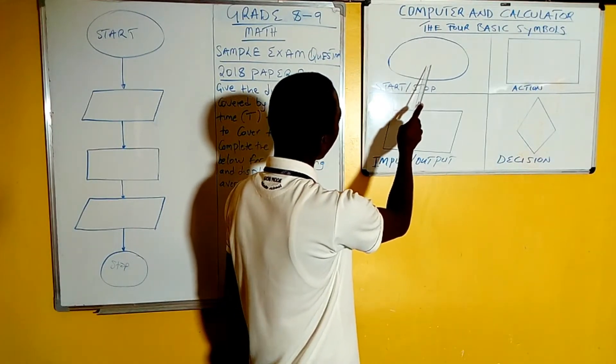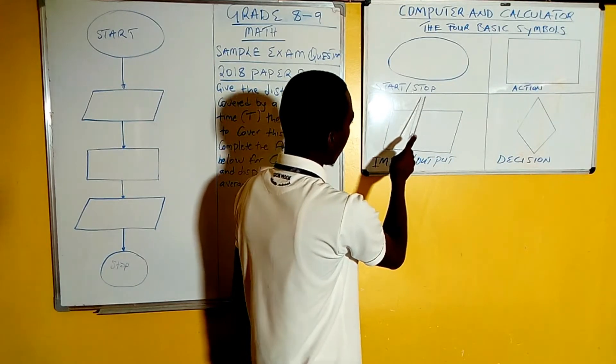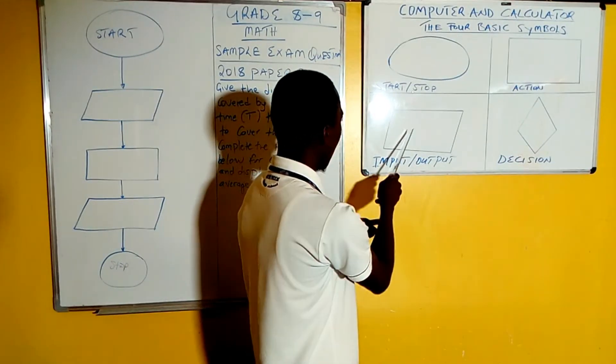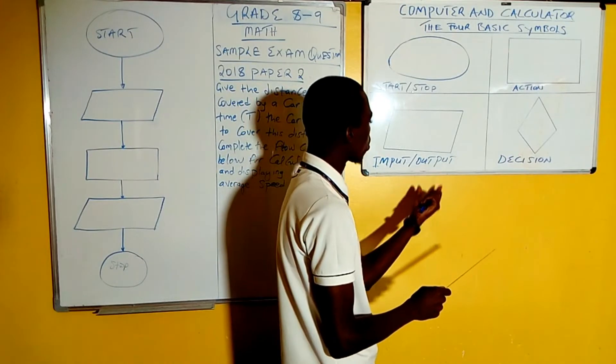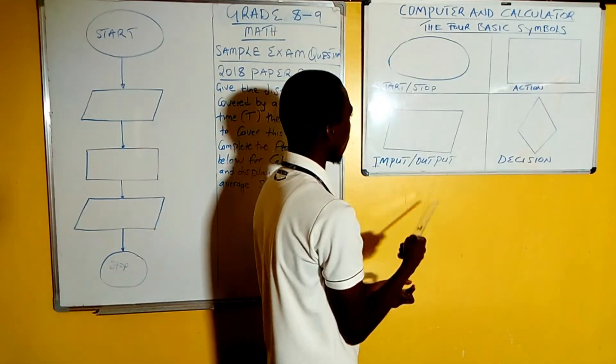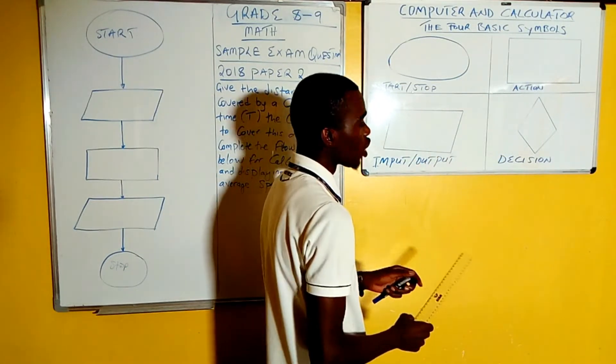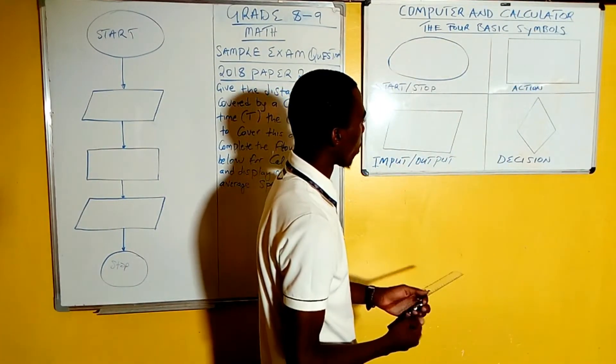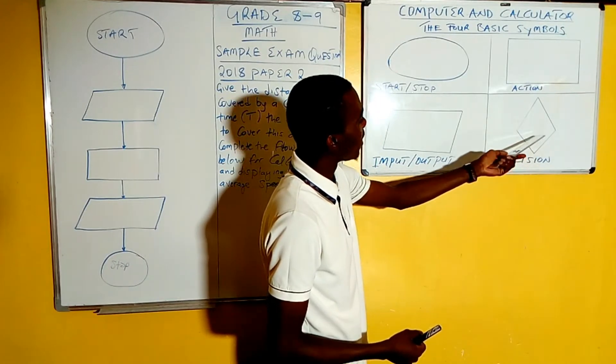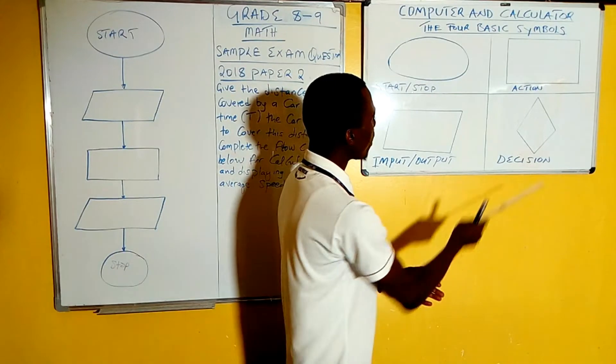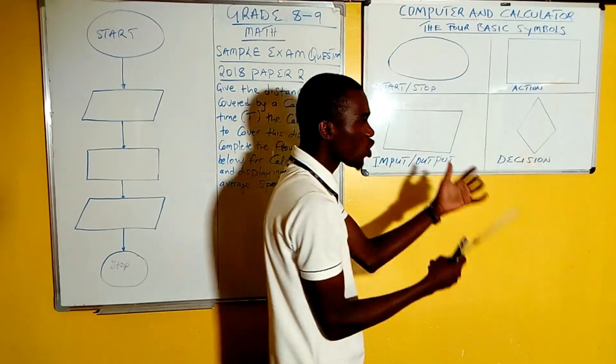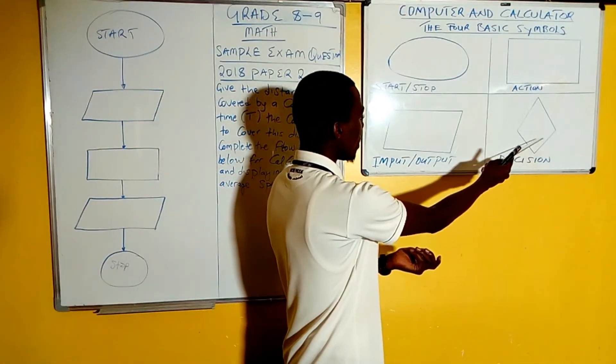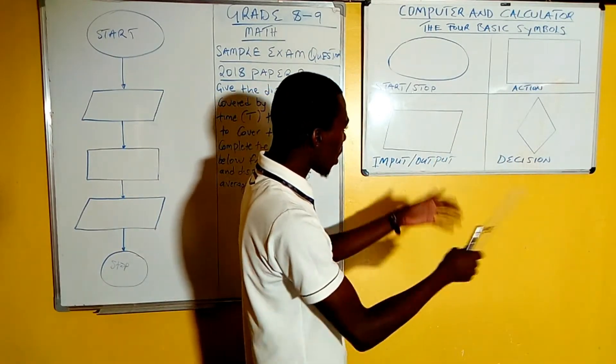We have this oval shape which simply means start or stop. Then we have the parallelogram - the input or output. The things you are putting in are what you write here, and the things the computer will display also go here. We also have the rectangle - the action box. This is where the performance is done and where we put the formulas. Then this diamond is the decision box, the thinking box as others call it. This is where we put questions when deciding something - if I do this, then that will happen.